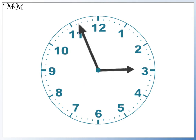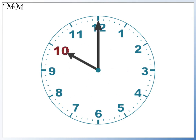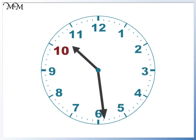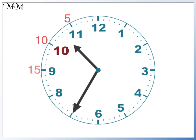Finally, we'll start at 10 o'clock. The minute hand moves around to 7. This is 5, 10, 15, 20, 25 — 25 minutes until the next hour. So it's 25 to. The hour hand is moving towards 11, so the time is 25 to 11.